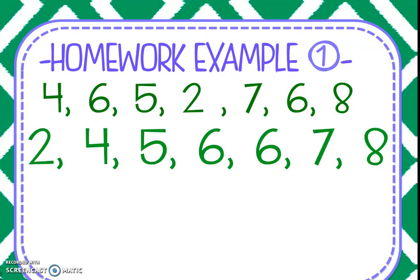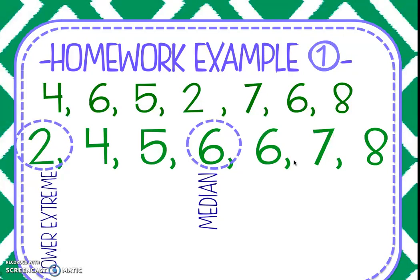To find the median, we're going to cross out numbers until we have one or two numbers left in the middle. In this case, we have one and our median is six. Now a couple other things that we talked about today was circling the upper and the lower extreme. Those are just other words for maximum and minimum. The lower extreme is 2, same thing as the minimum. The upper extreme is 8, same thing as the maximum. We're going to use those tomorrow when we make box plots.